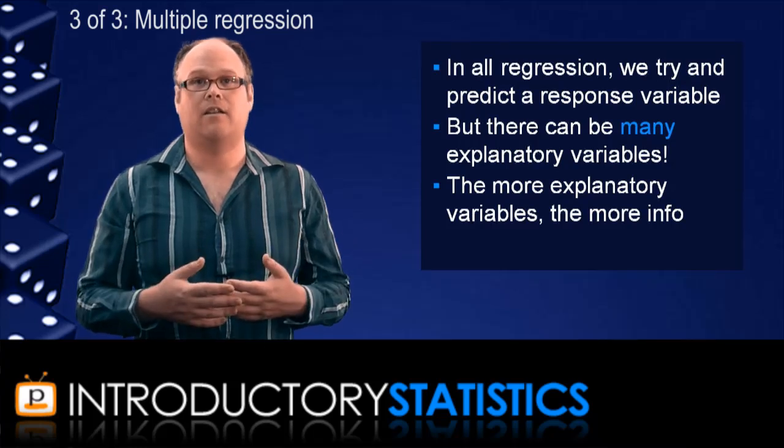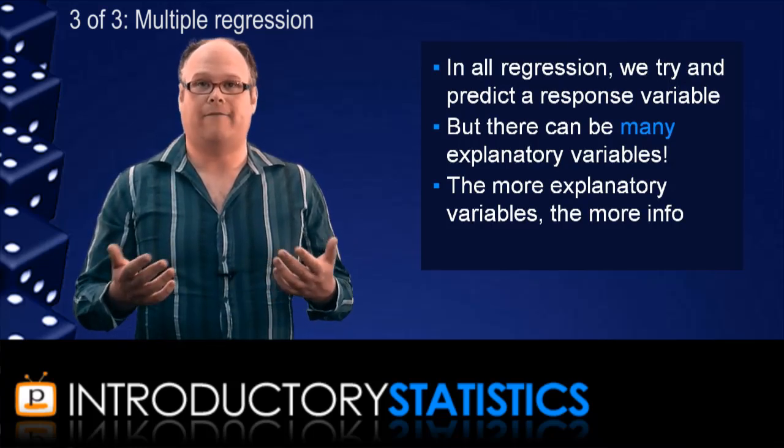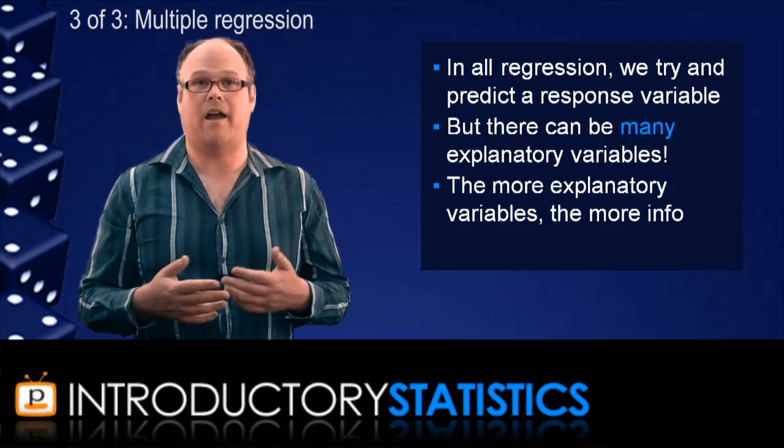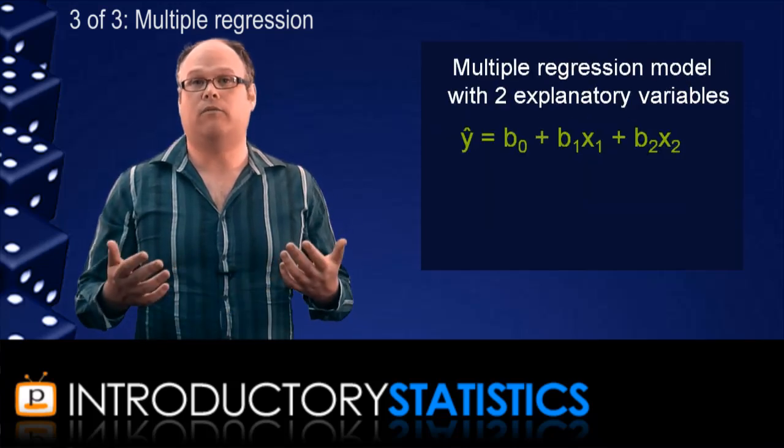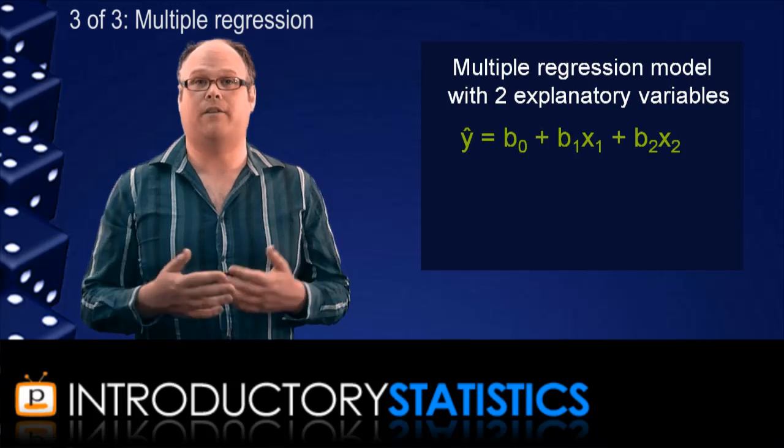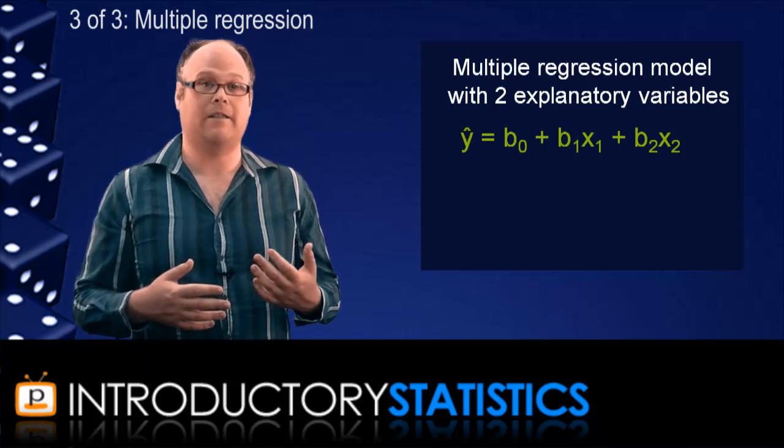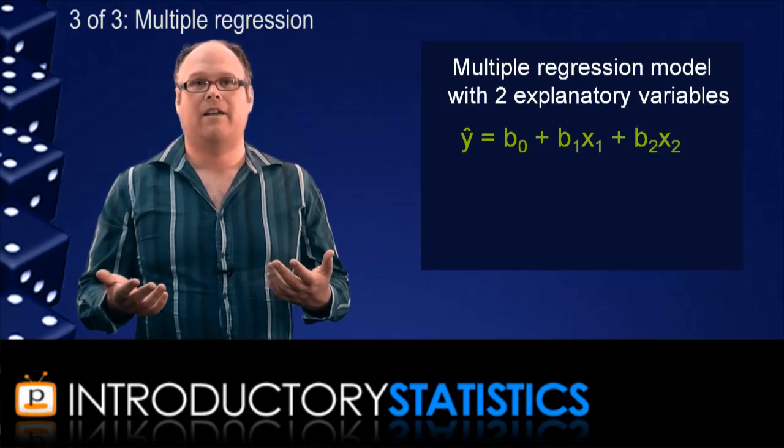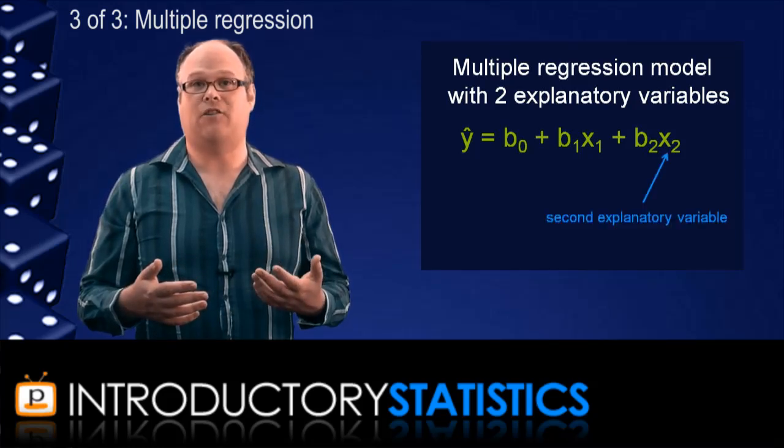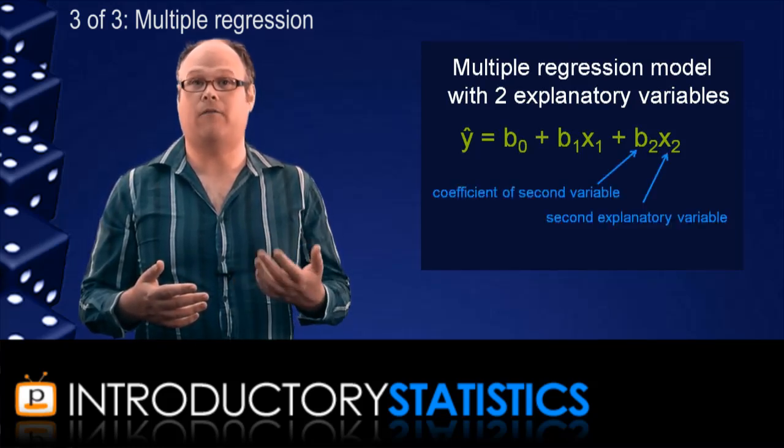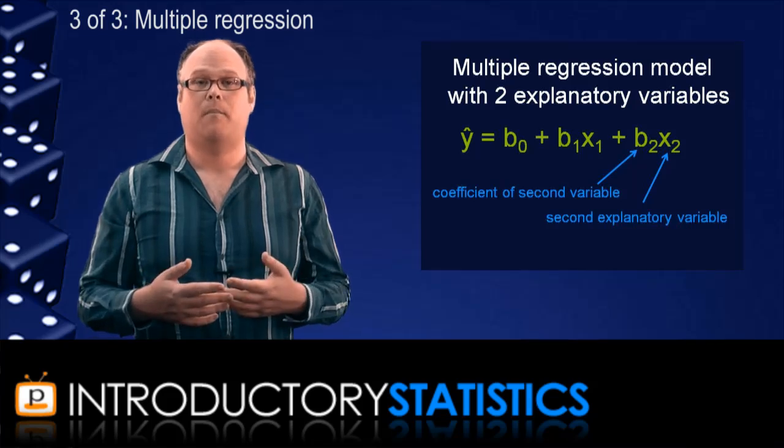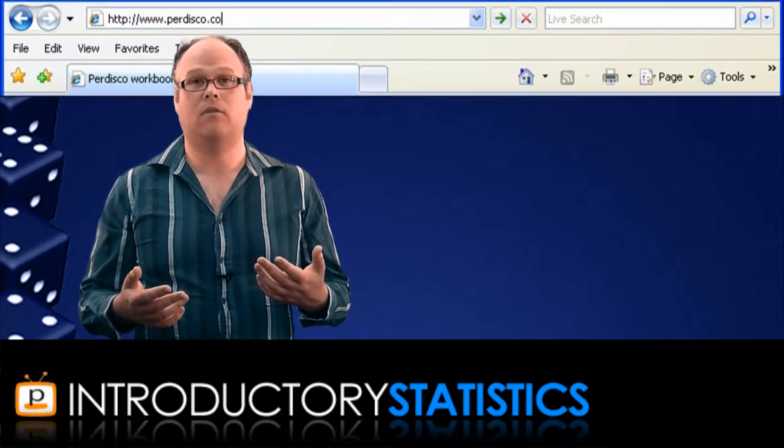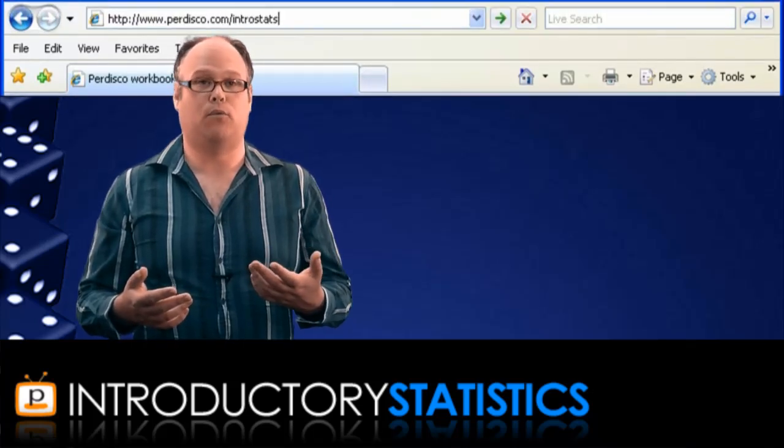For example, to predict the selling price of a house, we might take into account its square feet, but we might also take into account the number of bedrooms in the house, for example. So a multiple regression equation with two explanatory variables will look like this. Notice that it looks a fair bit like the regression line earlier, except now there is another x value tacked on the end. This value has its own coefficient as well, b₂. But other than that, we use the equation in a very similar way. Let's see an example in a question from the Pedisco workbook.